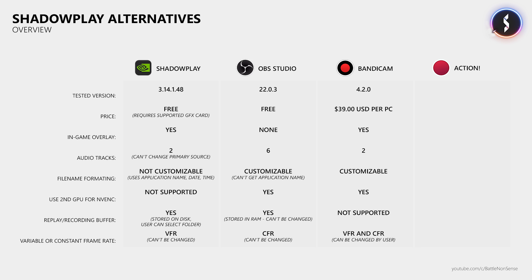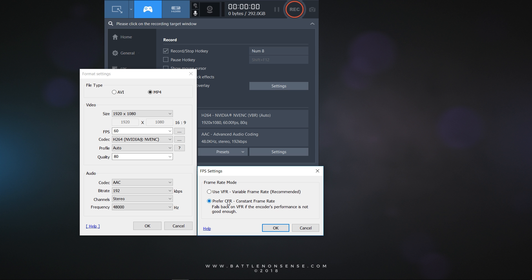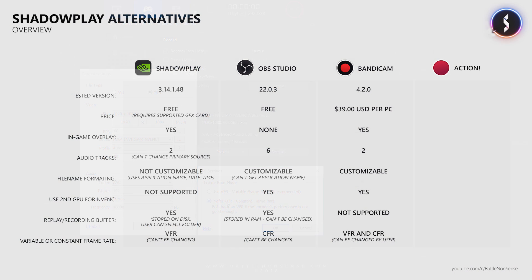Bandicam costs 39 USD per PC. It provides an in-game overlay, it only supports 2 audio tracks, you can customize the filename, and it supports offloading the video encoding to a second graphics card. But it still does not provide a replay buffer, which is a very big downside if you only want to capture your highlights. It also supports VFR and CFR, but you really want to use CFR to record with a constant frame rate to avoid the issues caused by a variable frame rate.